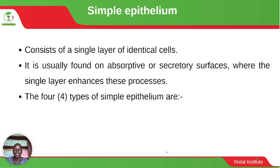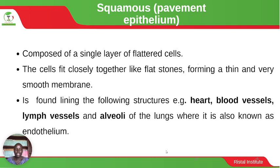The four types of simple epithelium include: squamous or pavement epithelium, which is composed of a single layer of flattened cells. The cells fit closely together like flat stones, forming a thin and very small membrane. It is found lining the heart, blood vessels, lymph vessels and the alveoli of the lungs, where it is also known as the endothelium.